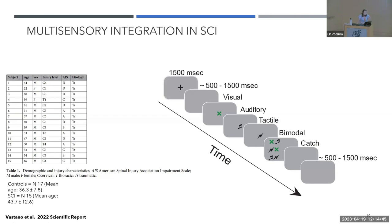Each trial started with a fixation cross of a second and a half. Participants were instructed to look at it, knowing that after this something would happen. After a variable interval of 500 milliseconds to a second and a half, any of the stimuli — visual, auditory, tactile, or a combination — could be delivered. After perceiving each stimulus, participants had to respond verbally as fast as possible.